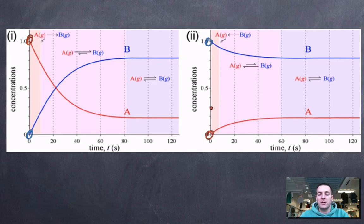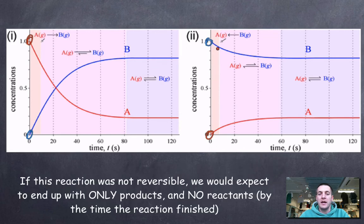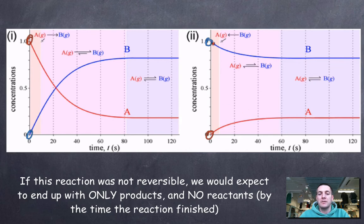Looking at it from the opposite direction — starting with no A and lots of B — the amount of B falls as it gets used up, and the amount of A increases as B turns into A. The forward reaction starts at zero and the backward reaction is going quickly, but as the amount of A increases the forward reaction speeds up, and as the amount of B falls the backward reaction slows down, until they reach the same rate as one another. We can mark on this graph the time at which equilibrium is reached — that's when the concentrations stop changing because the rates are equal.